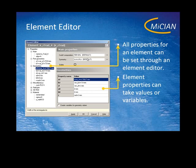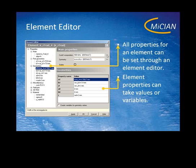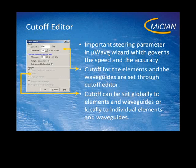On the top right pane you see two different fields. The first is the cutoff computation and the symmetry on the next line. If you double click on the cutoff frequency ellipsis, the cutoff editor will appear.